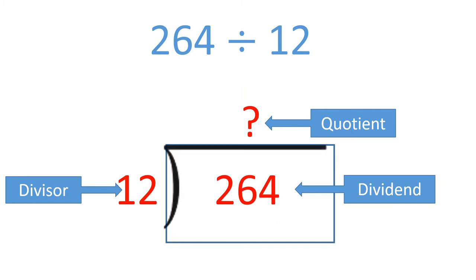I'm going to break my length into two sections. In the first section, I'll decide on a number that I can multiply by 12 that will get close to 264. I know that 12 times 20 equals 240, so I'm going to label the first section 20.